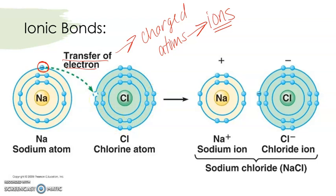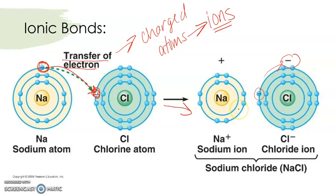Chlorine has seven electrons in its outer shell. Remember, eight electrons makes a happy, full shell. So what chlorine will do — it's kind of like an electron bully — it will steal this electron. The chlorine says, 'that's my electron, I'm going to fill my shell.' What you end up with is chlorine with a full outer shell but an extra electron, which causes it to have a negative charge. Over here, sodium also has that full outer shell, but it's down an electron — it lost an electron. Taking away a negative makes it positive.